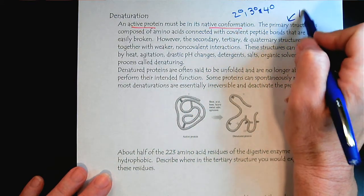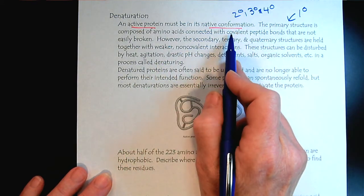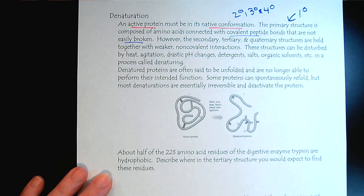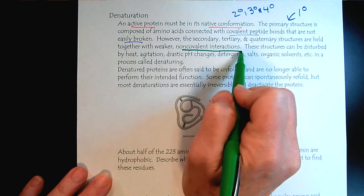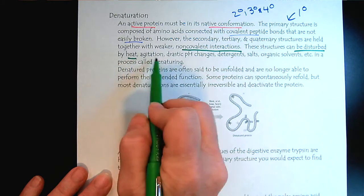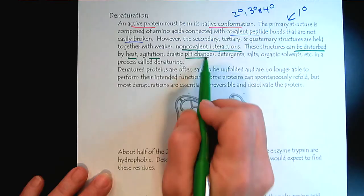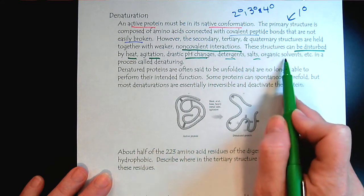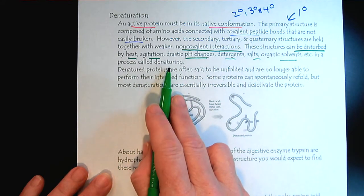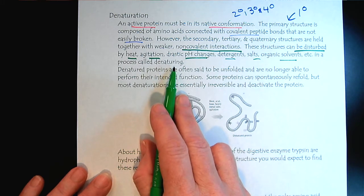The primary structure - that's covalent bonds, so those are not easily broken. However, the secondary, tertiary, and quaternary structure, that's all about non-covalent interactions. These can be disturbed by heat and agitation, changes in pH, detergents, salts, solvents. There's all kinds of things.